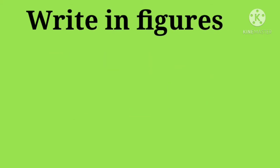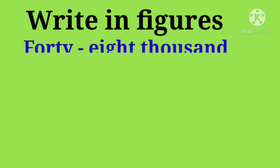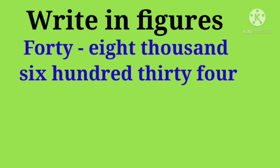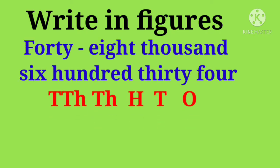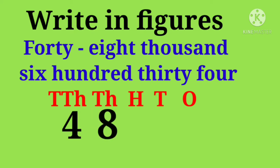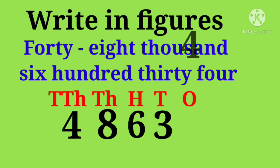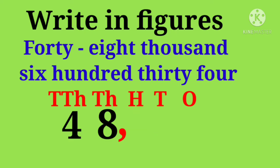Next, write in figures: 48,634. First, write the place values. Put 4 under 10,000s, 8 under 1000s, 6 under 100s, 3 under 10s, and 4 under 1s. Put the comma between 8 and 6, i.e. between the 100s and 1000s place.